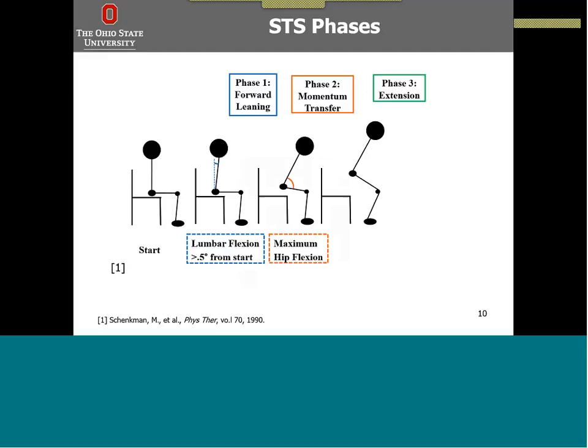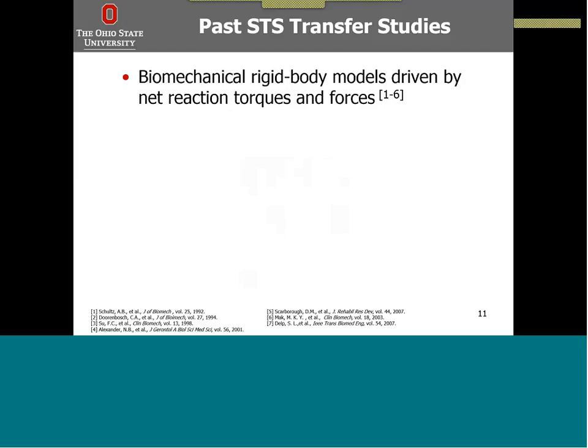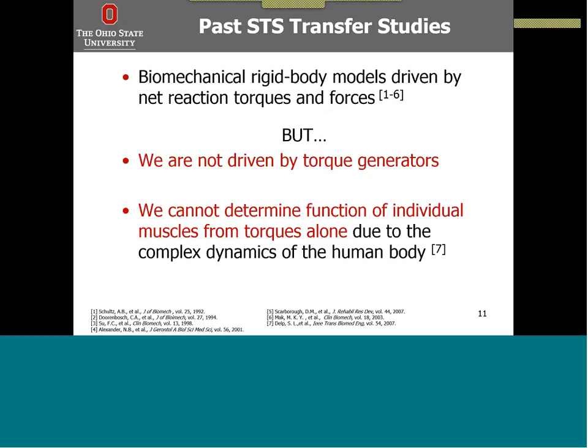The last phase, the extension phase, when you're extending all of your joints, begins when maximum dorsiflexion is reached, and then you go into a full standing upright position. Past sit-to-stand transfer studies have used biomechanical rigid body models driven by net reaction torque forces informed by experimental techniques, whether EMG or ground reaction forces. But we as humans are not driven by a torque generator, so we cannot determine the function of individual muscles from torques alone due to the complex dynamics of the human body.